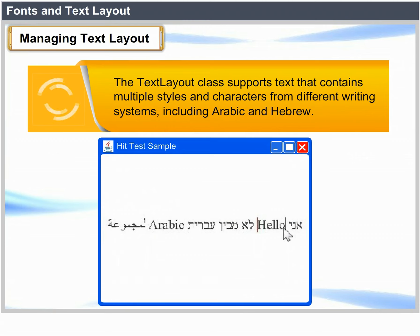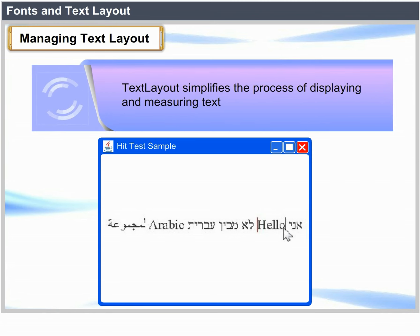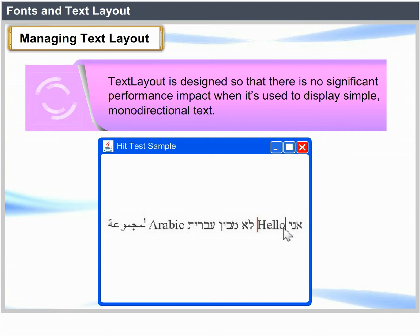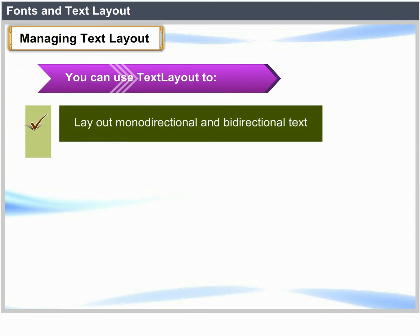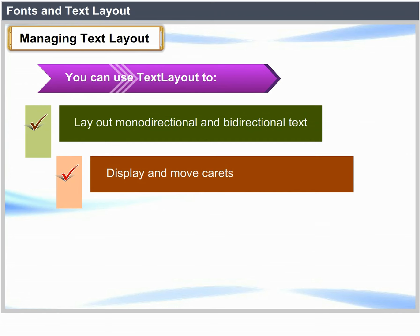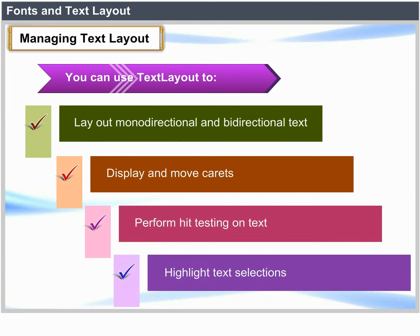Managing text layout: The TextLayout class supports text that contains multiple styles and characters from different writing systems including Arabic and Hebrew. TextLayout simplifies the process of displaying and measuring text. It is designed so that there is no significant performance impact when used to display simple monodirectional text. A TextLayout class manages the positioning and ordering of glyphs. You can use TextLayout to lay out monodirectional and bidirectional text, display and move carets, perform hit testing on text, and highlight text selections.